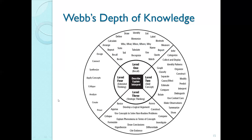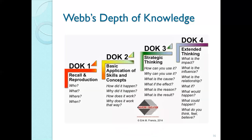Now we talk about Webb's Depth of Knowledge. We touched on this a couple weeks ago with the wheel — four different levels of complexity. Here are some questions that align with Webb's DOK. It's kind of like Bloom's but condensed — seven levels of Bloom's versus four levels of Depth of Knowledge. I like to use Webb's DOK because it's a little more succinct, though I like Bloom's too because it's been around forever.